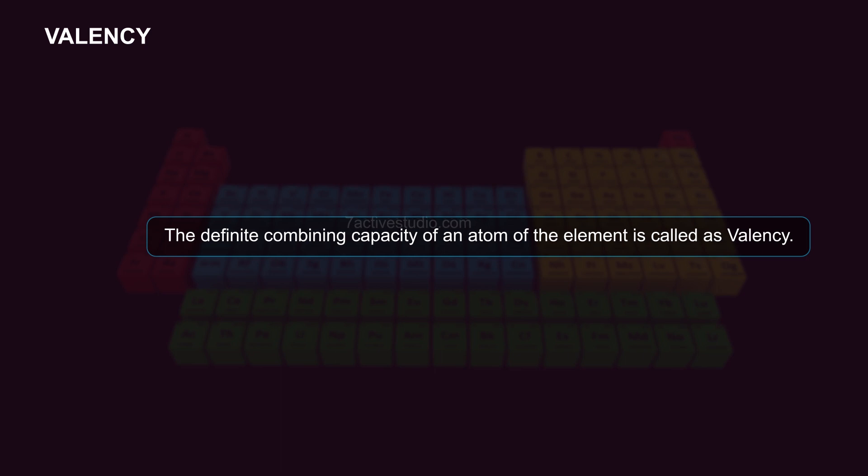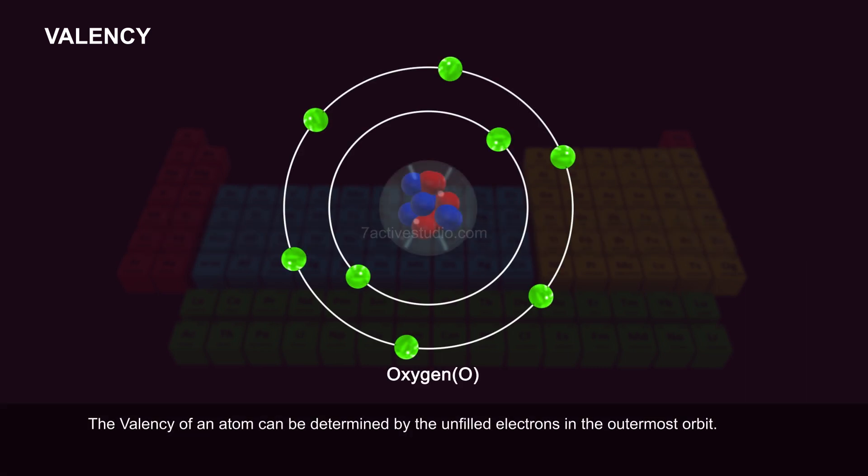The definite combining capacity of an atom of the element is called valency. The valency of an atom can be determined by the unfilled electrons in the outermost orbit.